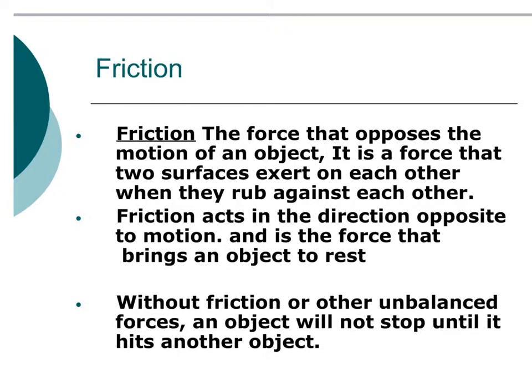Now remember, friction is a force that opposes motion. When we use a coefficient of friction, this is a value that shows the relationship between the force of friction between two objects and the normal reaction between the objects involved. It's also a value used in physics to find an object's normal force or frictional force when other methods are not available.